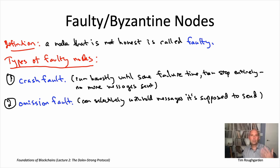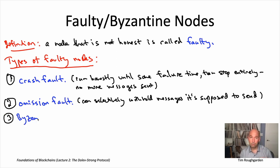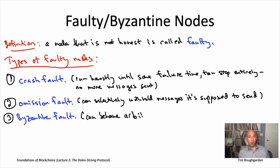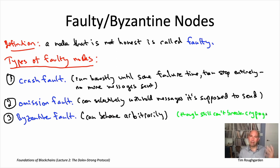That brings me to the final type of faulty node — the one most relevant for blockchains — which is the idea of a Byzantine fault. With Byzantine faults, when some of our nodes are Byzantine, we actually don't make any assumptions about their behavior at all. We still assume that cryptography exists and that they can't break cryptography, but as far as how they participate in this consensus protocol, we make literally no assumptions about what they do.